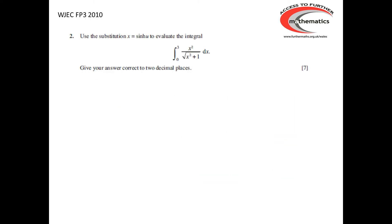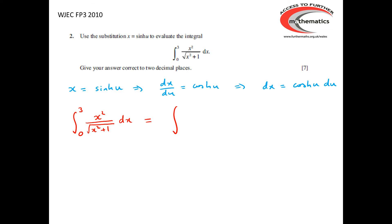Moving on to a second example from the 2010 paper, we have to use the substitution x equals sinh(u) to evaluate the integral between 0 and 3 of x² over the square root of (x² plus 1). Starting with the substitution details: x equals sinh(u) tells us that dx/du is cosh(u), so dx can be replaced by cosh(u) du.